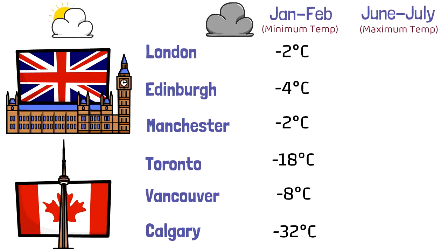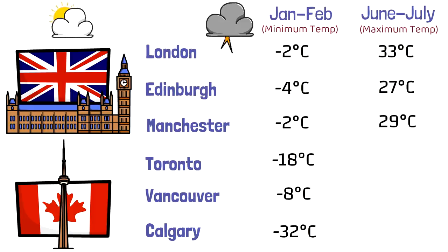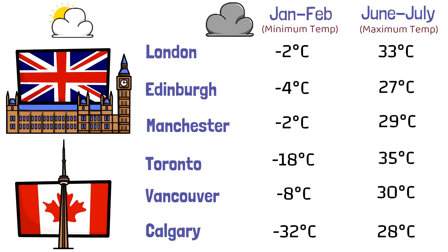Vancouver had a minimum of minus 8°C and Calgary minus 32°C — these would typically be nighttime temperatures. In summer, the maximum temperatures were: London 33°C, Edinburgh 27°C, Manchester 29°C, Toronto 35°C, Vancouver 30°C, and Calgary 28°C. So Canada is much colder in January and February but also warmer in June and July. Notice the transition in London from minus 2 to 33°C, versus Toronto from minus 18 to 35°C — adapting to Canadian cities in the first few months can be more difficult.